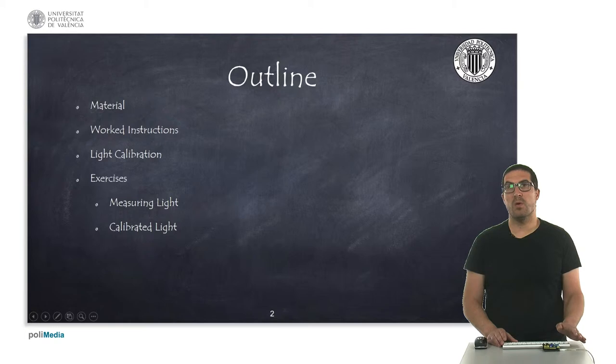The first measuring raw measurements of light and plotting them on the console and the second one is to measure a calibrated light.